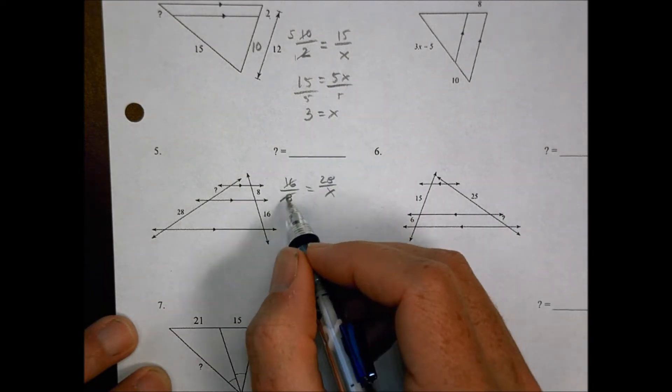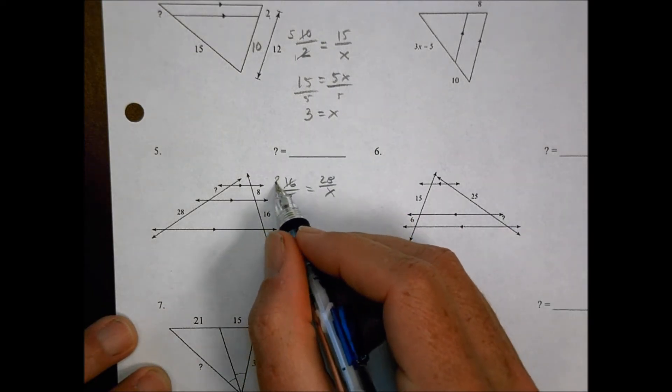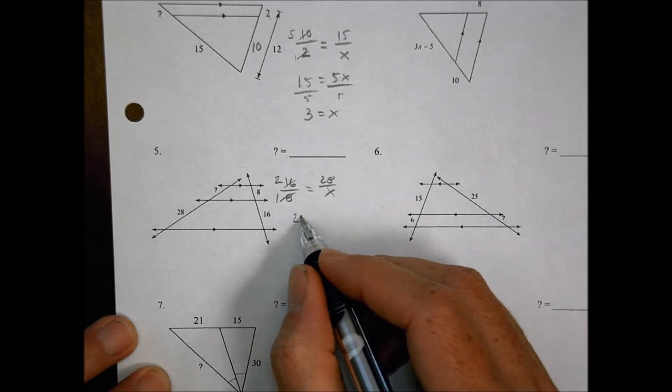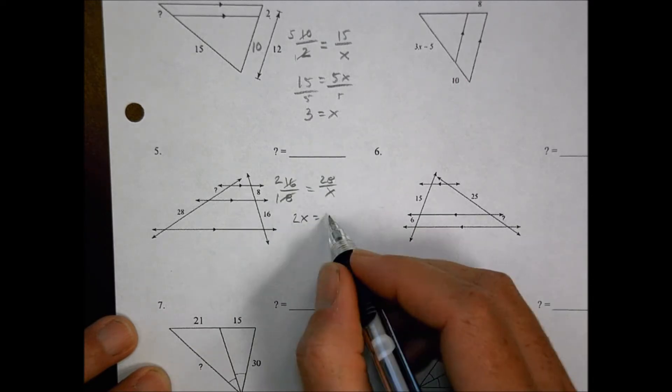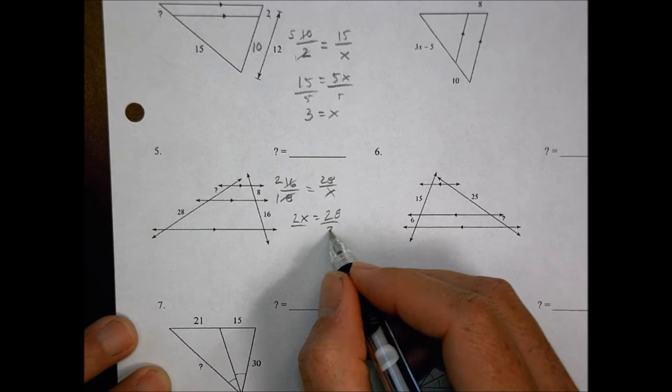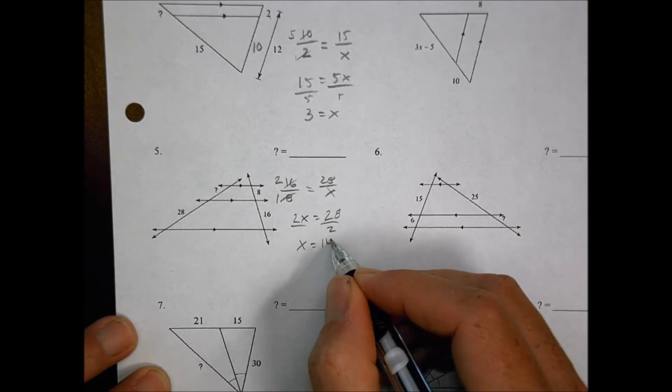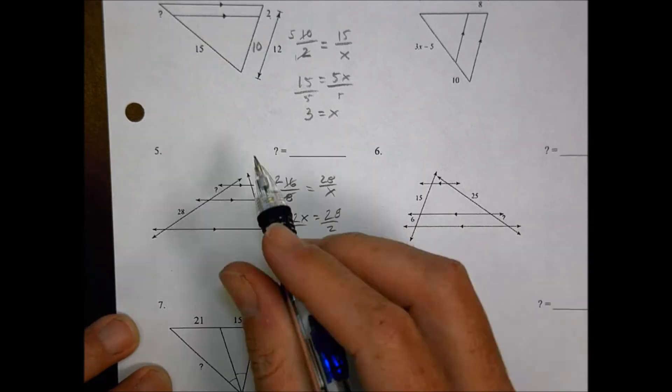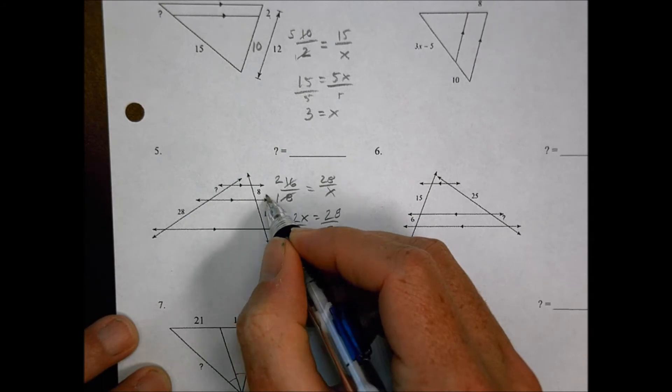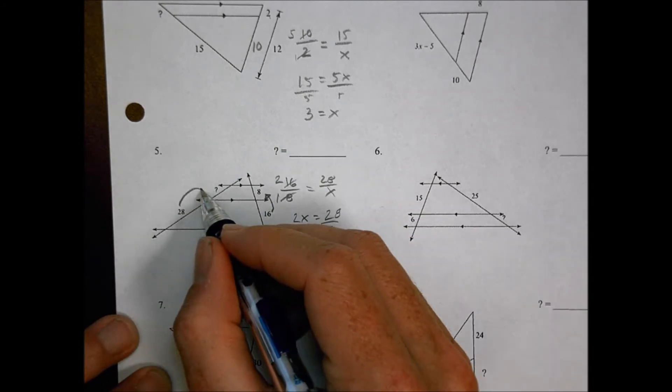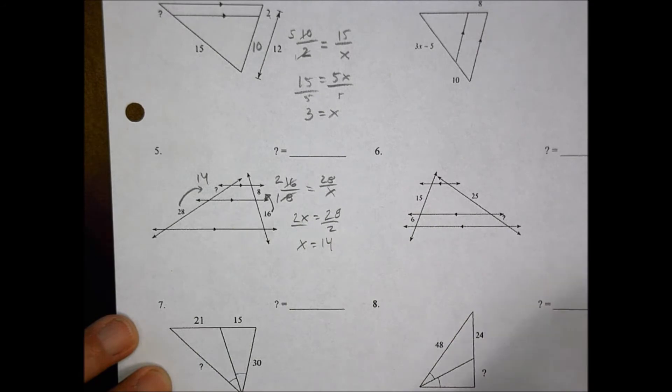And if I do that, I can reduce. 8 goes in here 1 time, 8 goes in here 2 times, so no problem. I have 2x equals 1 times 8 is 28. Divide both sides by 2, and so x equals 14. Sometimes you can also look at patterns and say 16 to 8 is cutting it in half, so what's half of 28? It's 14, which is what we did anyways.